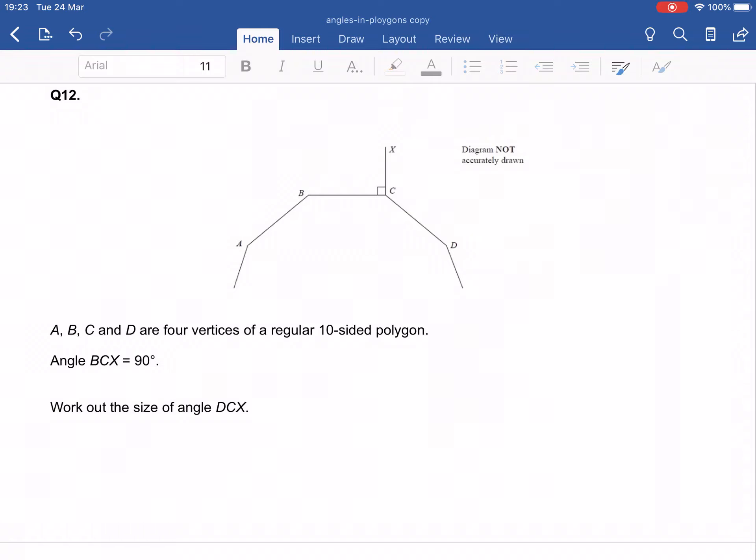All right, so one more clip and we'll call it a day for today. Number 12. So A, B, C, D are vertices of a regular 10-sided polygon. We've got angle BCX is 90 degrees, and they label that for us already here. And we want to work out the size of angle DCX, so we want this angle here.